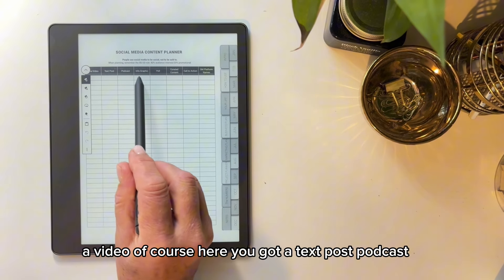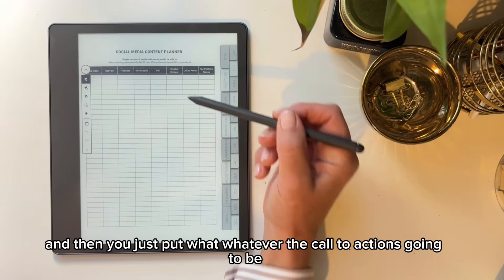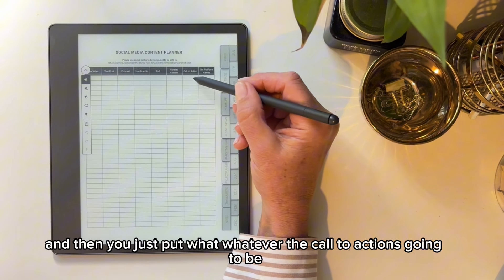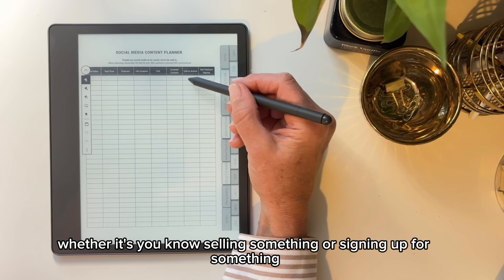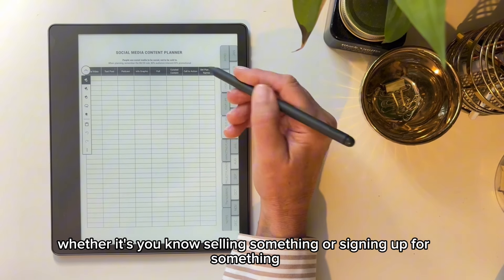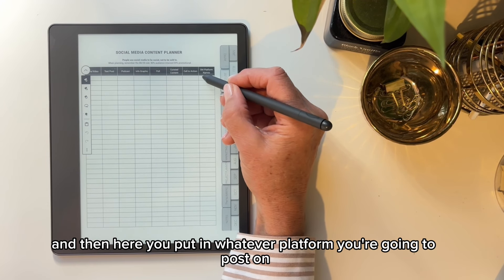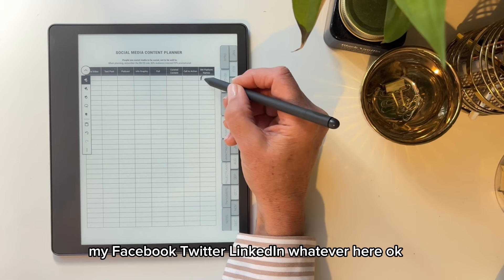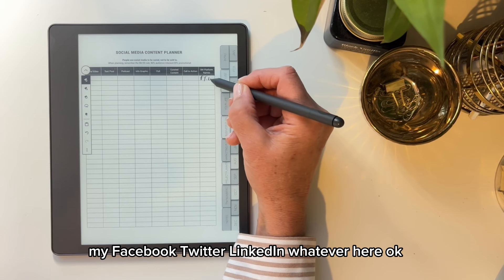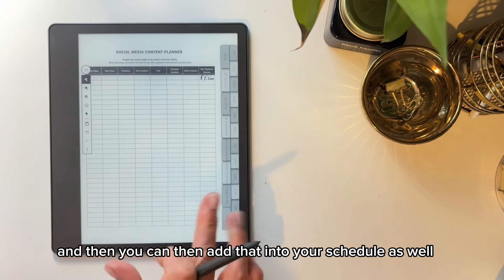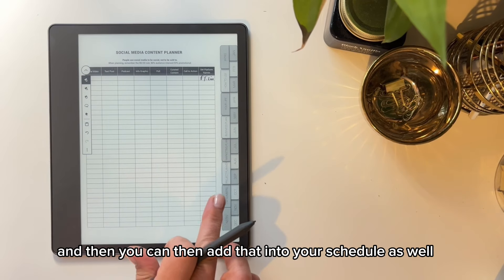Of course here you've got a text post, podcast, infographic, and then you just put whatever the call to action is going to be, whether it's selling something or signing up for something. And then here you put in whatever platform you're going to post it on like Facebook, Twitter, LinkedIn, whatever here. And then you can add that into your schedule as well for the month.